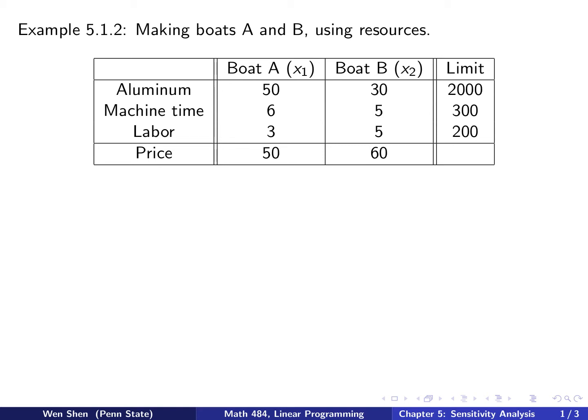Here we are going to make bolts, two types, A and B, with various resources needed and the information is given in this table. We have aluminum, machine time, and labor as three resources. How much they are needed for each bolt is listed here. You can sell the bolt at the given price, and here is the limit of your resources.